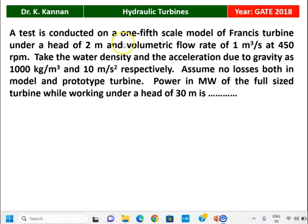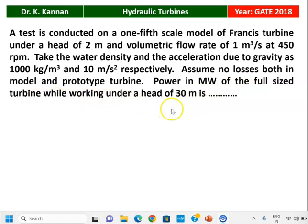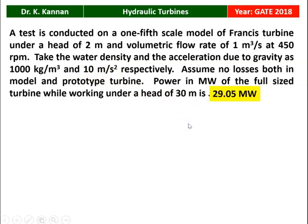The next question is from the 2018 question paper. A test is conducted on a one-fifth scale model of a Francis turbine under a head of 2 meters and volumetric flow rate of 1 meter cube per second at 450 RPM. Take water density as 1000 kg per meter cube and acceleration due to gravity as 10 meter per second square. Assume no losses in both model and prototype. The power in megawatt of the full-sized prototype turbine working under a head of 30 meters is to be calculated. The answer is 29.05 megawatt — the power developed by the prototype of the Francis turbine is 29.05 megawatt. We will see how in the next slide.